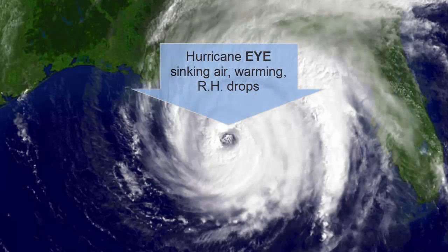Notice that the image of the hurricane shows a spot in the middle with no clouds. This clear eye in the center is a region where air is sinking and warming up. Its relative humidity is decreasing, so there's no precipitation, only evaporation.